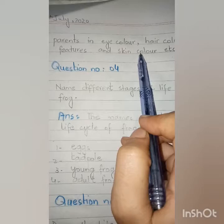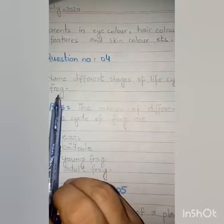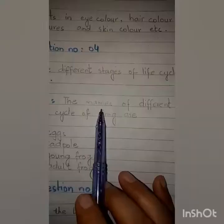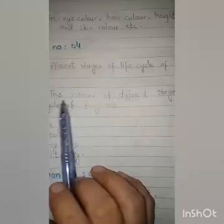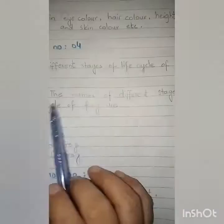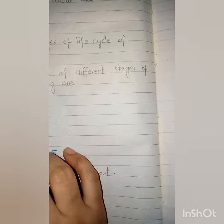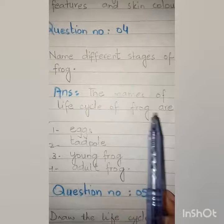Question number four: Name the different stages of the life cycle of a frog. The names of the different stages of the life cycle of a frog are: egg, tadpole — T-A-D-P-O-L-E — young frog, and adult frog.